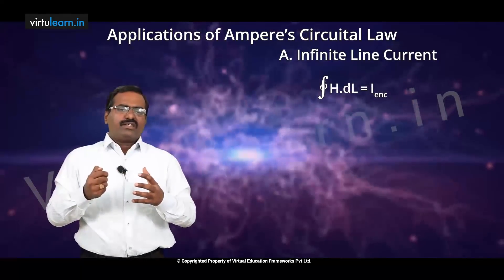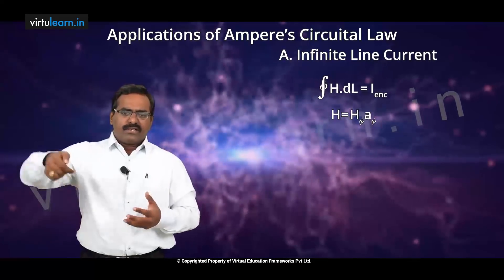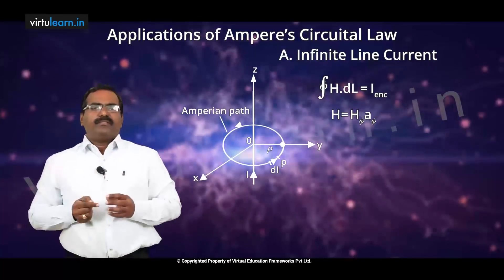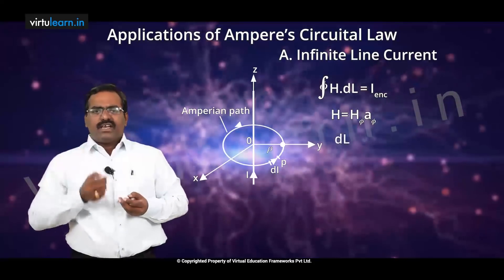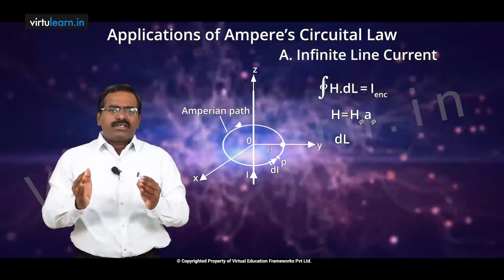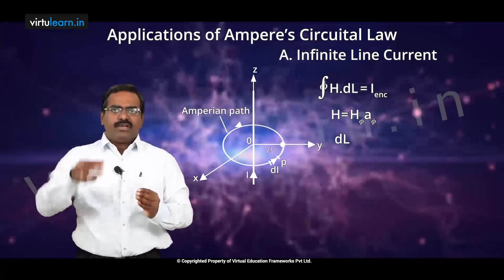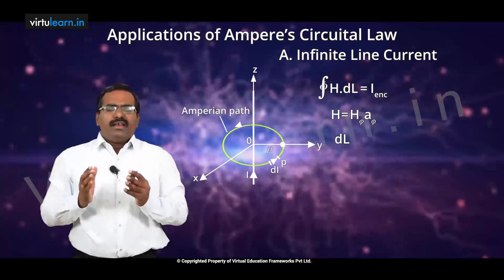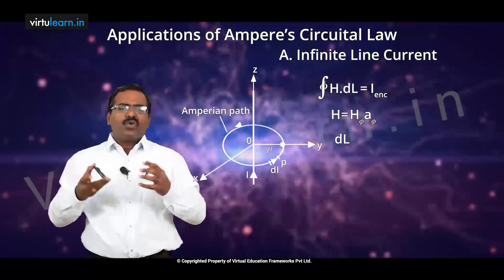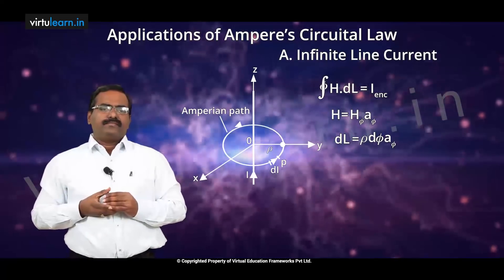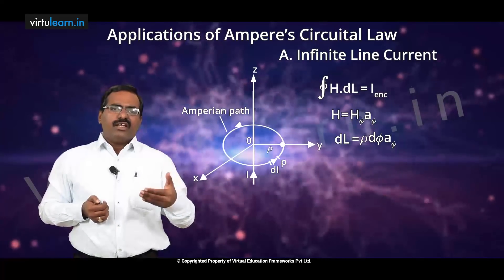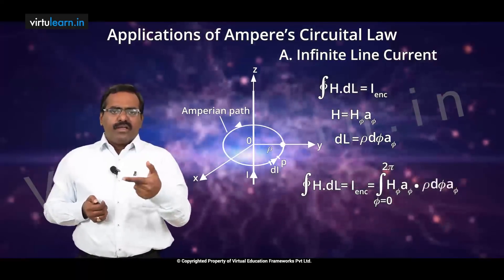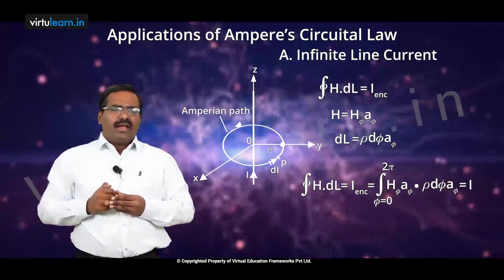We write H as Hφ times aφ, because the magnetic field forms concentric circles along the φ-axis. Next, dl in cylindrical coordinates is written as ρ dφ times aφ, since for an infinitely long current-carrying conductor the preferred coordinate system is cylindrical. Substituting these expressions into Ampere's law gives: the integral of Hφ aφ dot ρ dφ aφ equals i.